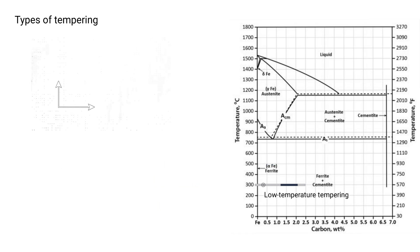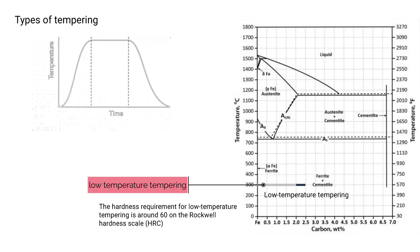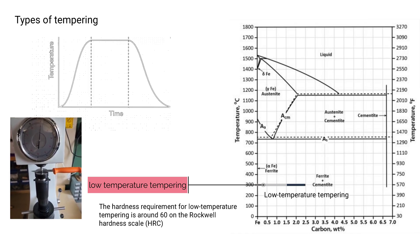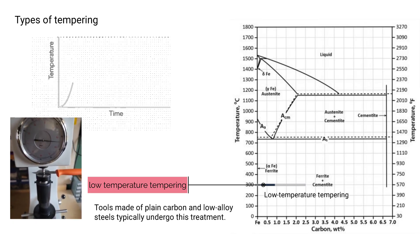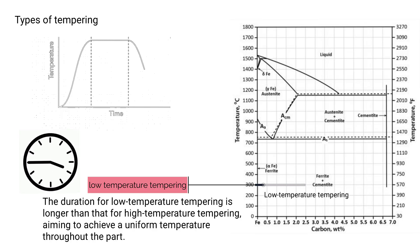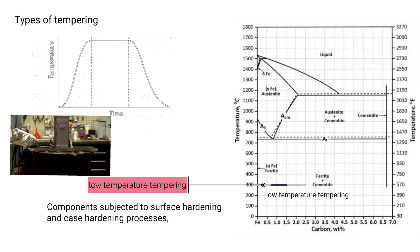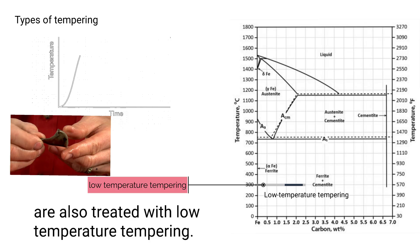Low temperature tempering is used to reduce brittleness while maintaining toughness. The tempering temperature for this method falls between 160°C and 300°C, with a hardness requirement of around 60 on the Rockwell hardness scale. Tools made of plain carbon and low alloy steels typically undergo this treatment. The duration is longer than that for high temperature tempering, aiming to achieve a uniform temperature throughout the part. Components subjected to surface hardening and case hardening processes such as carburizing, cyaniding, or carbonitriding are also treated with low temperature tempering.